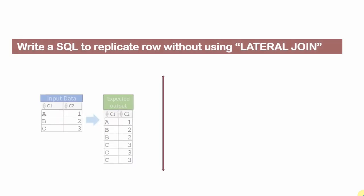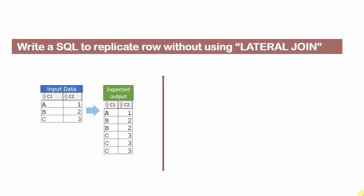Because in most of the videos, I have used the lateral join to replicate the rows. So the question is: how can we replicate the rows without using lateral join? The reason for this question is probably that the lateral join was introduced from Oracle version 12 only. So if you want to implement similar functionality in previous versions of Oracle, how can we do it? That is what we are going to see in this video.